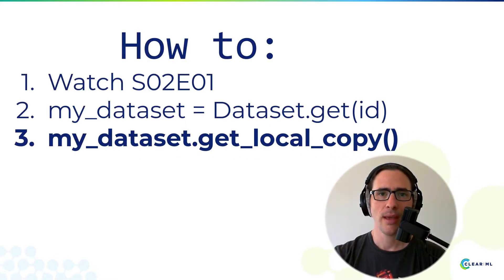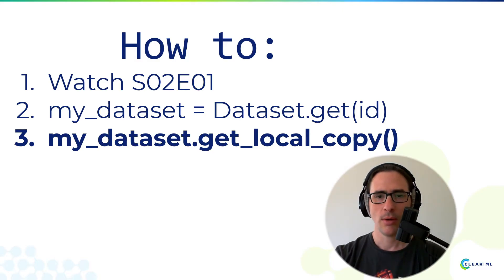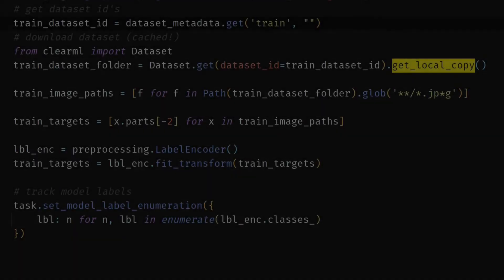If you're wondering how to do it, first watch the previous episode on how to get the dataset set up. Then it's two lines: dataset.get(ID) to get the Python object, and then get_local_copy to get the data on your training or testing machine. Time for an example — it's pretty simple.